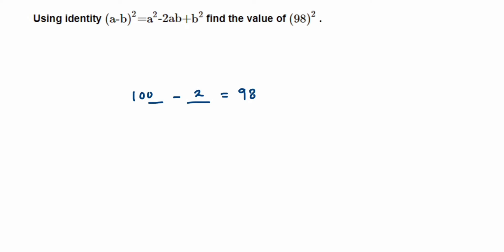So here 98² can be written as (100 - 2)². But what is this (100 - 2)²? It's like (a - b)². Now we're going to substitute here.